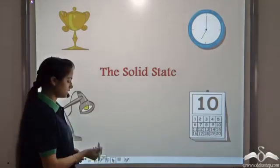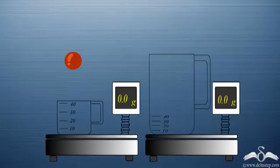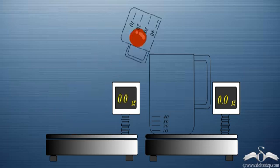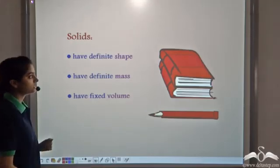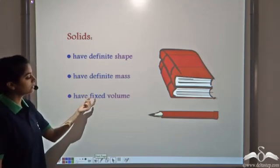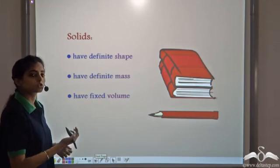Now let's focus on the solid state. We take a ball and first place it in a small container, then transfer it into the bigger container. In the smaller container it weighs 10 grams, and in the bigger container it again weighs 10 grams. The shape of the ball does not change, and since its shape is not changing, the volume does not change either. All solids have a definite shape, a definite mass, and therefore a definite or fixed volume.